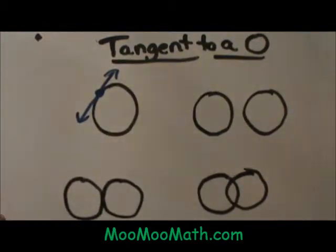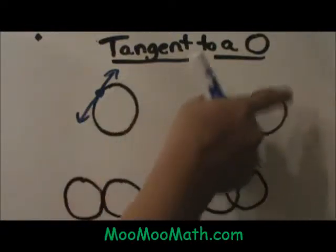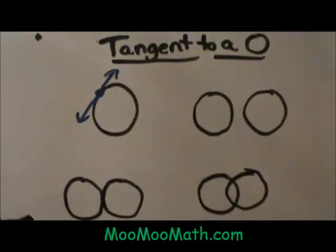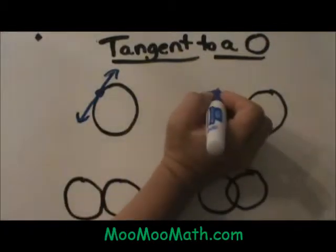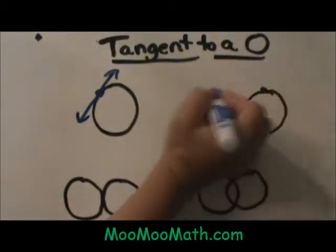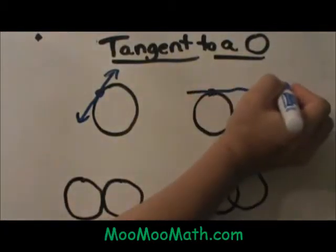Let's look at some scenarios when you have two circles. I have two circles here and I want to draw some tangents. These two circles have four possible tangent lines. You can draw a tangent to the circle up here.